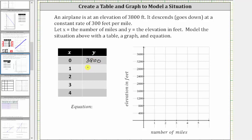And now from here, because the plane is descending or going down at a constant rate of 300 feet per mile, as x increases by one, y is going to decrease by 300, which means when x is one, y is equal to 3,800 minus 300, which is 3,500.